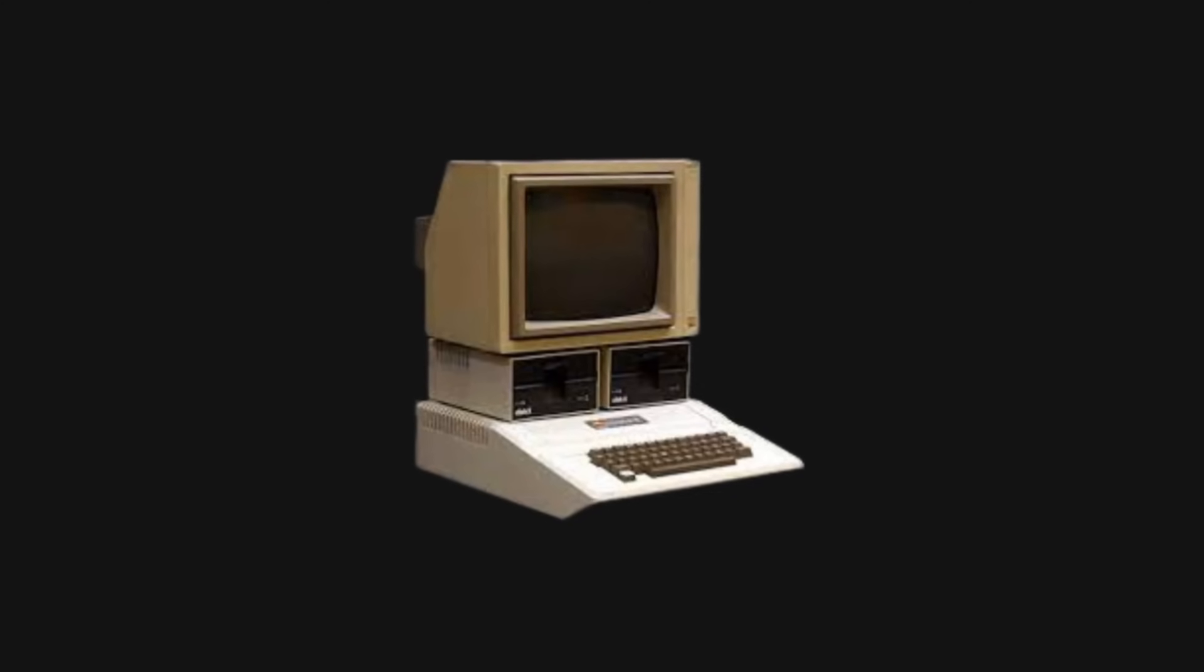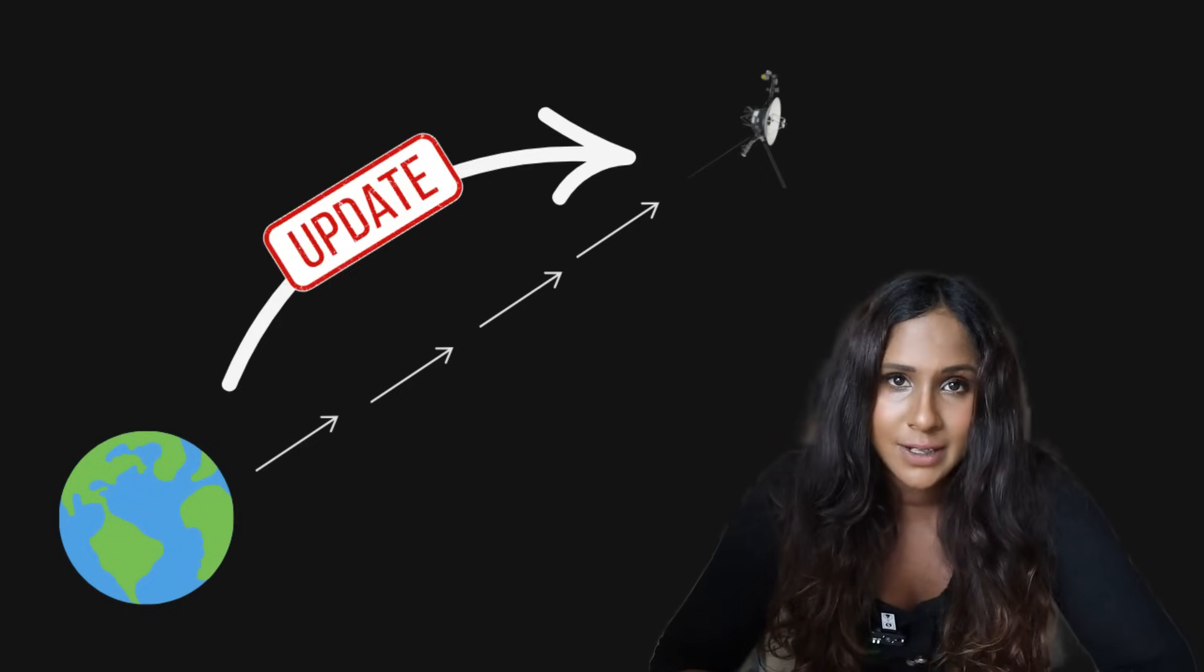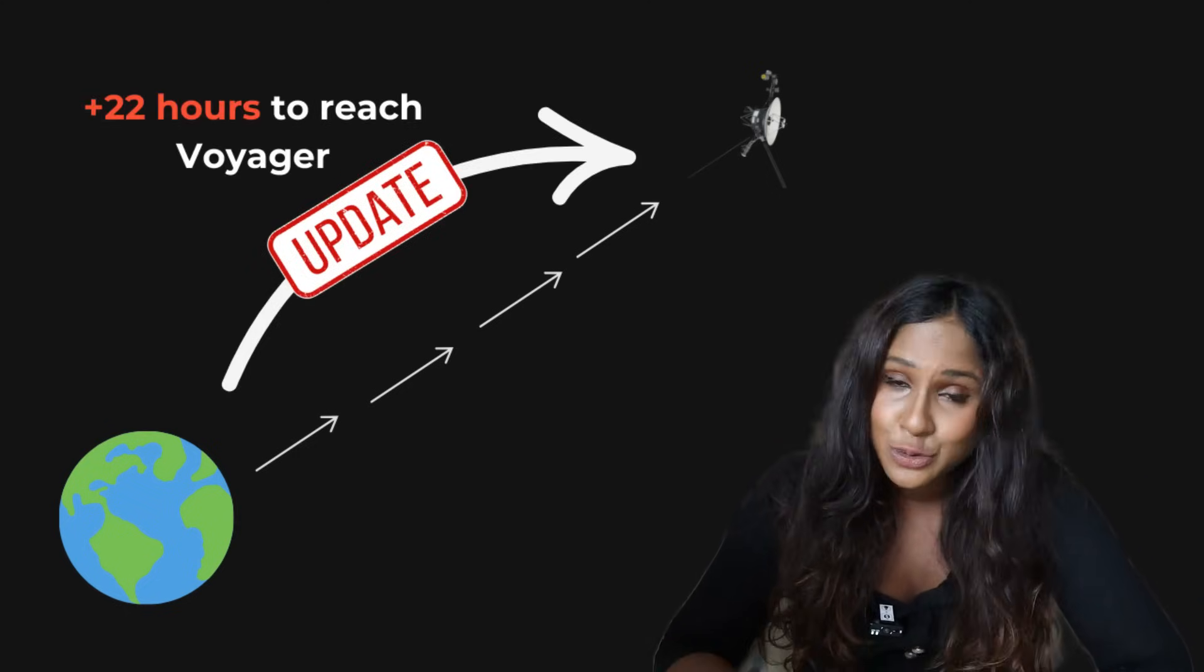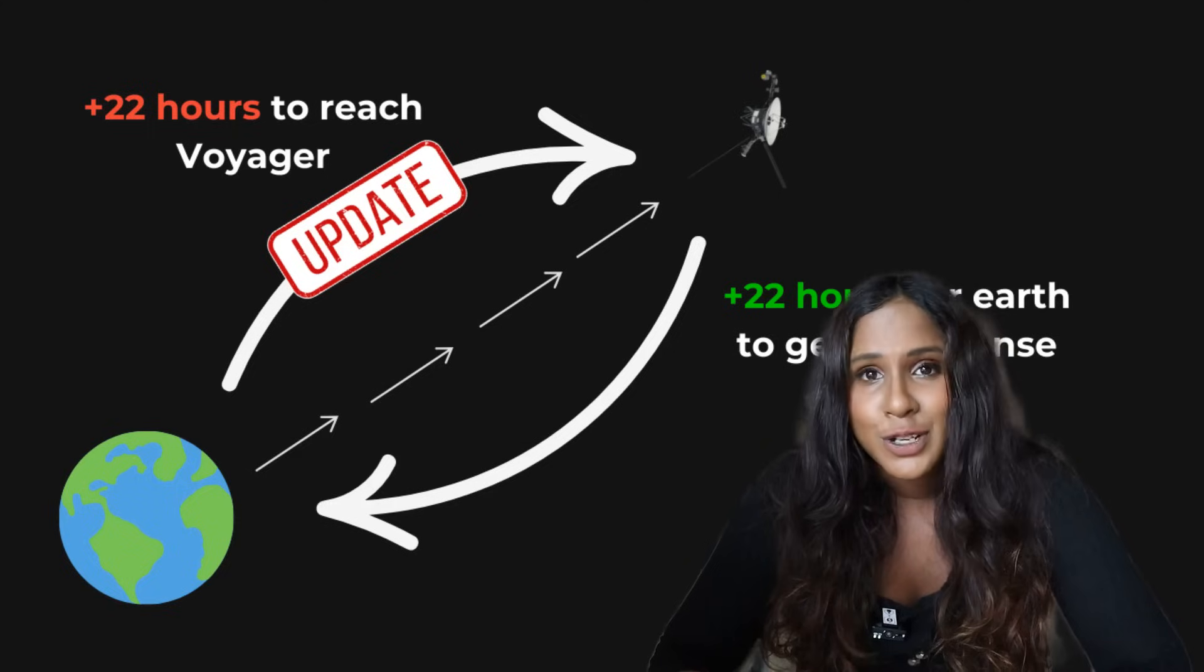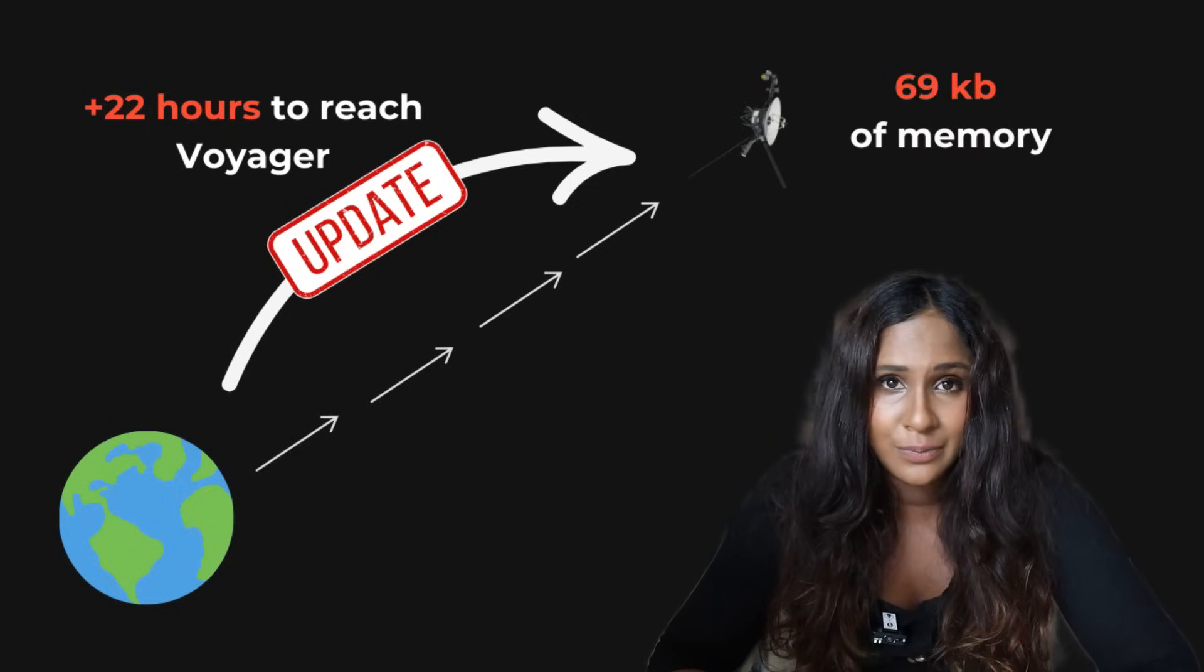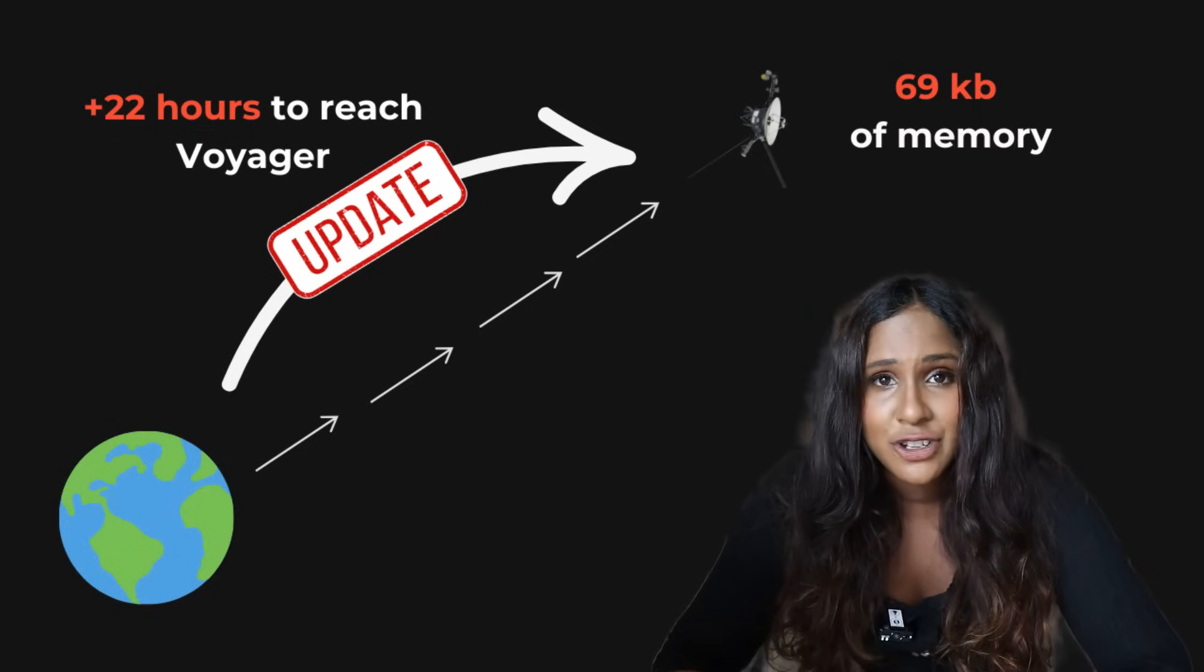So you can imagine trying to update software on a computer that is older than the internet, using a programming language that many modern developers haven't even touched. And that's a general challenge that NASA engineers face when maintaining systems that are on the Voyager. They can't just push a quick update because every command takes over 22 hours to reach Voyager 1 and another 22 hours back for a response. The software has to work on 69 kilobytes of memory, which is probably another challenge.